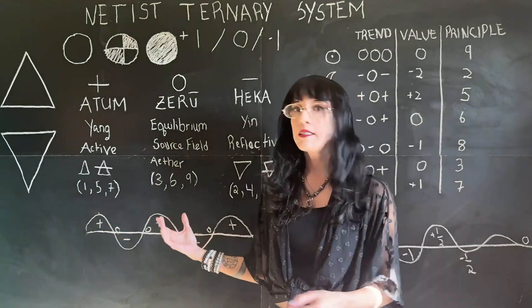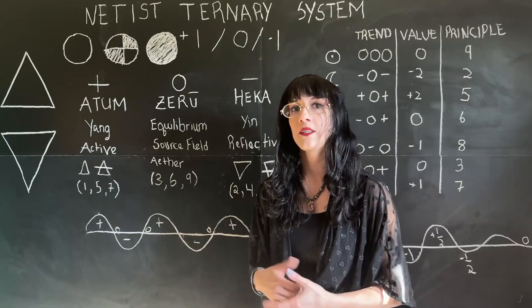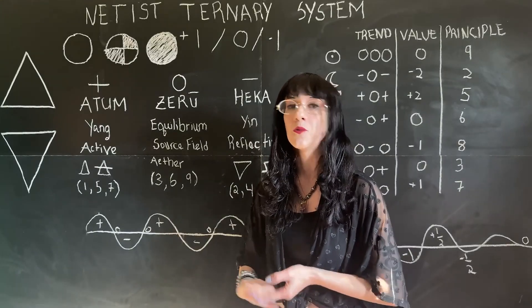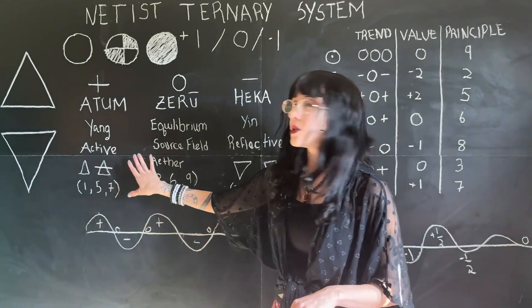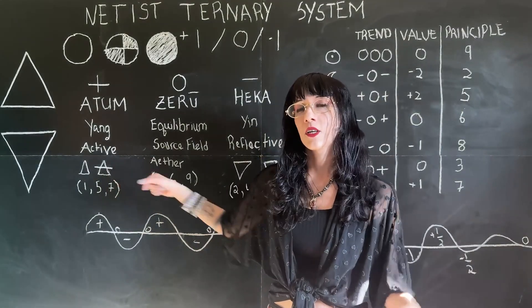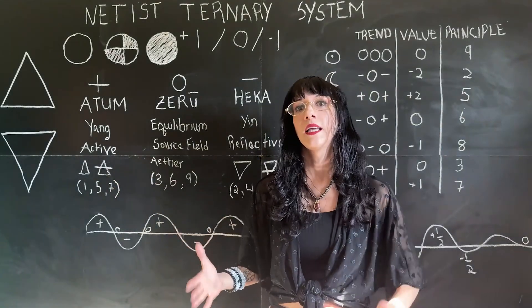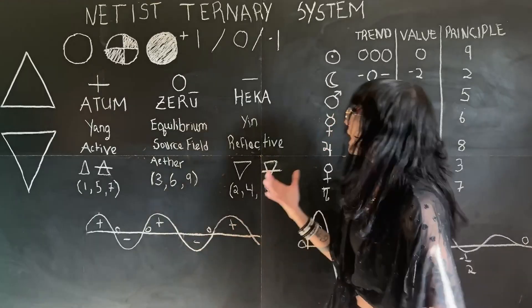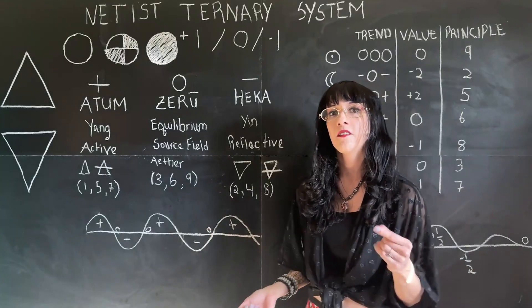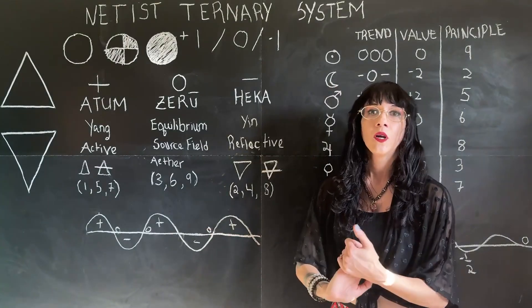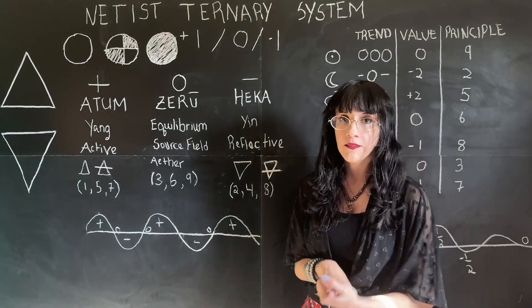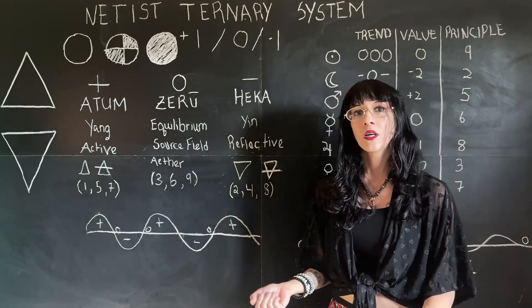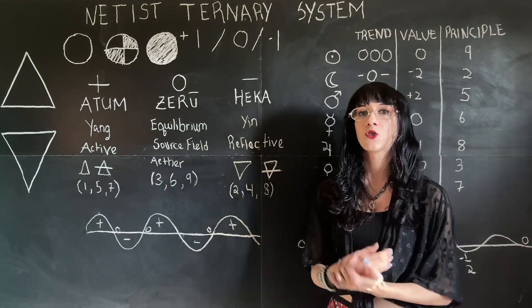And to understand these, you will get a lot more information within my numerology videos. And we'll link those down below. So Atum is the active, creative spark. But it alone cannot really do anything. It has to have Heka, which is that negative patterning pole. So we don't think of negative as bad. We're thinking of negative as that inward, reflective, contractive pole.